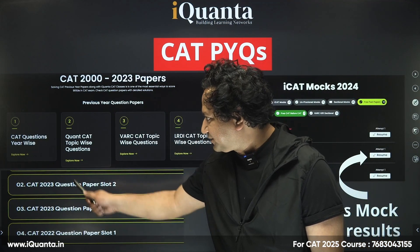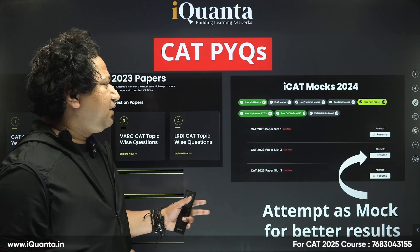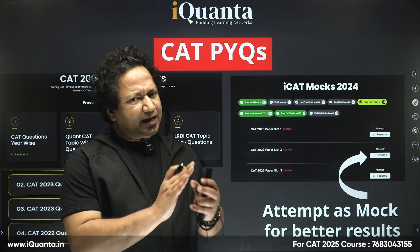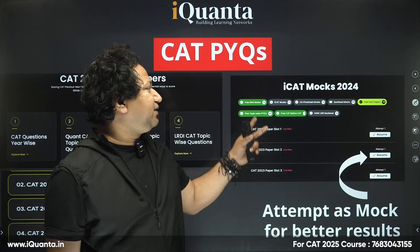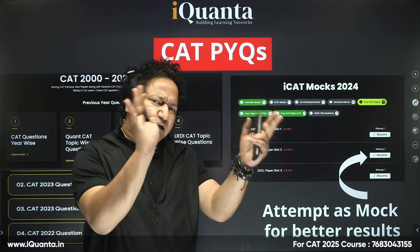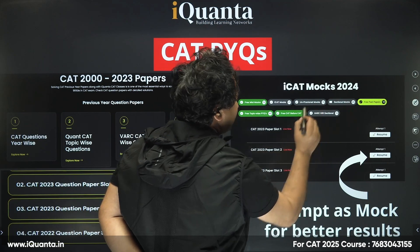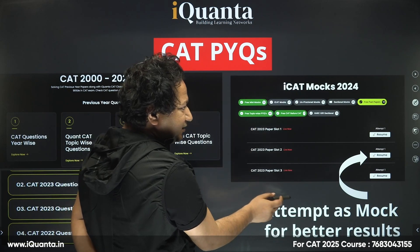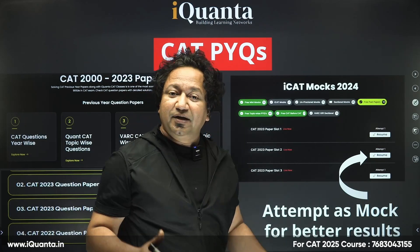This is how the question paper looks — year-wise, slot 1, slot 2, slot 3, and so on. But now, if you want to write previous year papers as a complete mock, that's also available — and that's what makes this different. On the iQuanta website, you'll see free mini-mocks, free past papers, free topic-wise PYQs, free CAT before CAT, and VARC gift sectional. You can click on these and attempt previous year questions just like you attempt a normal CAT mock.